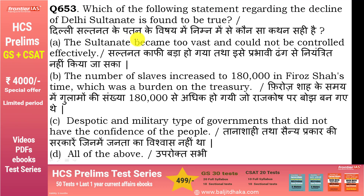Which of the following statements regarding the decline of Delhi Sultanate is found to be true? तीनों options सही हैं: Sultanate काफी बड़ा हो गया था और प्रभावी ढंग से नियंत्रित नहीं हो सका; Firoz Shah के समय गुलामों की संख्या एक लाख अस्सी हजार से अधिक होगई जो राजकोष पर बोझ बन गए; और तानाशाही तथा सेनाप्रकार की सरकारें जिनमें जनता का विश्वास नहीं था. तो सही उत्तर है option D — all of the above.